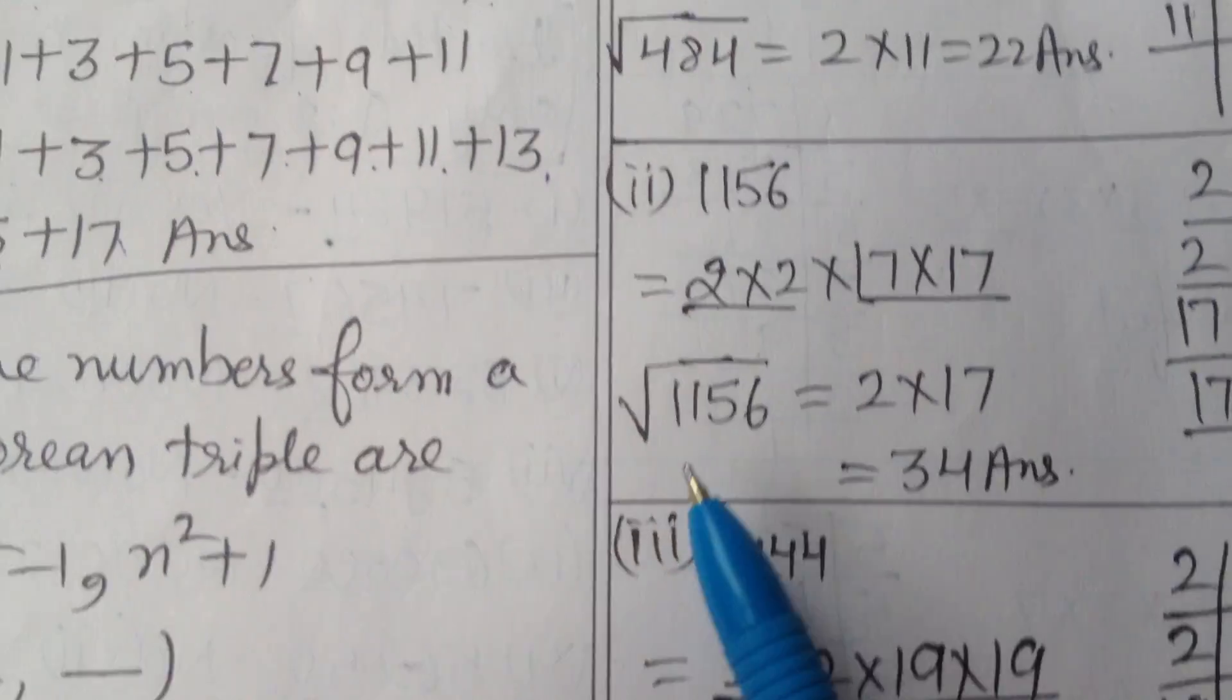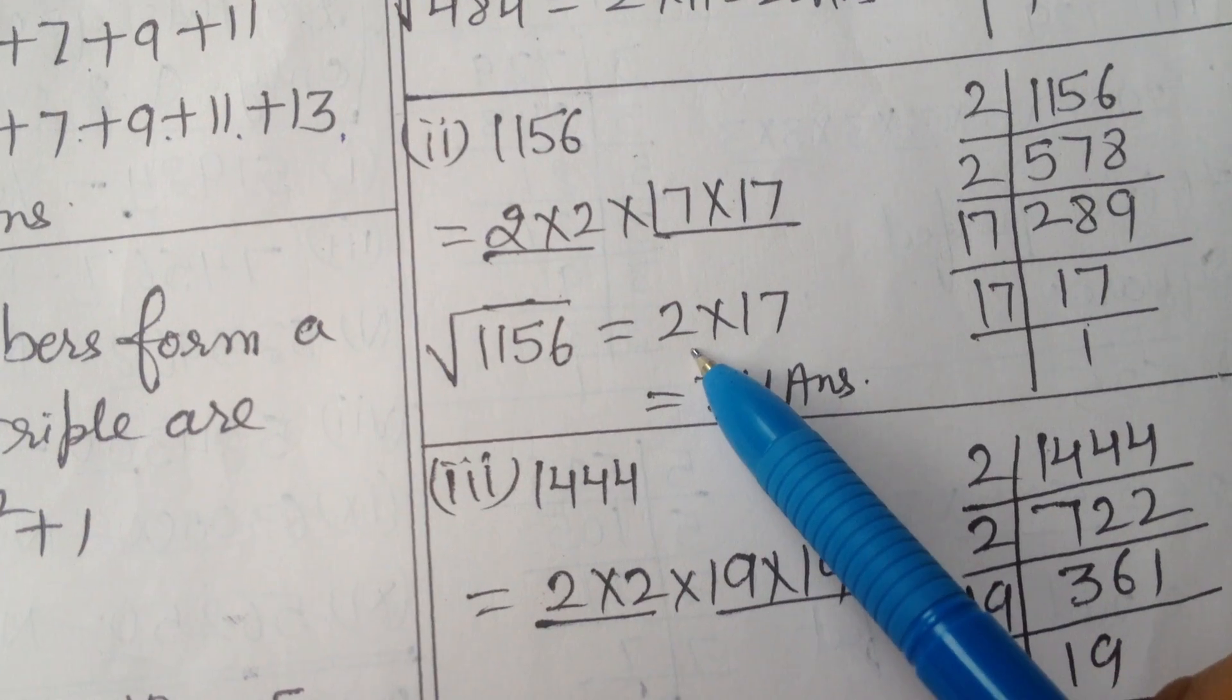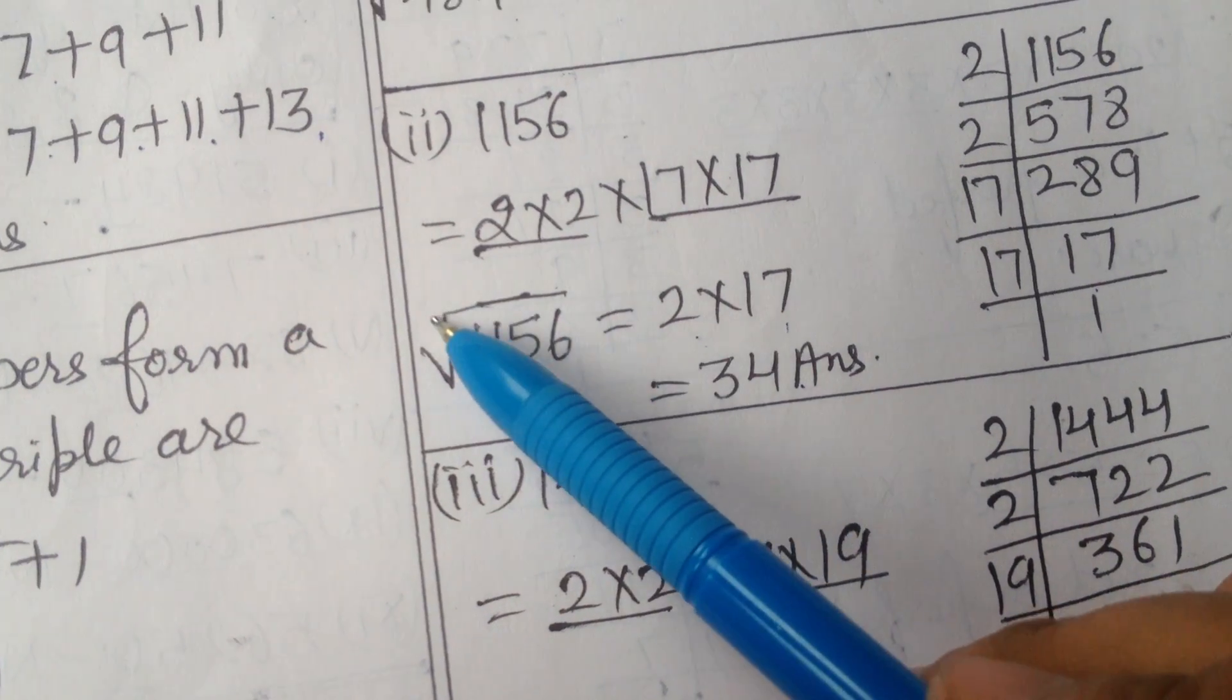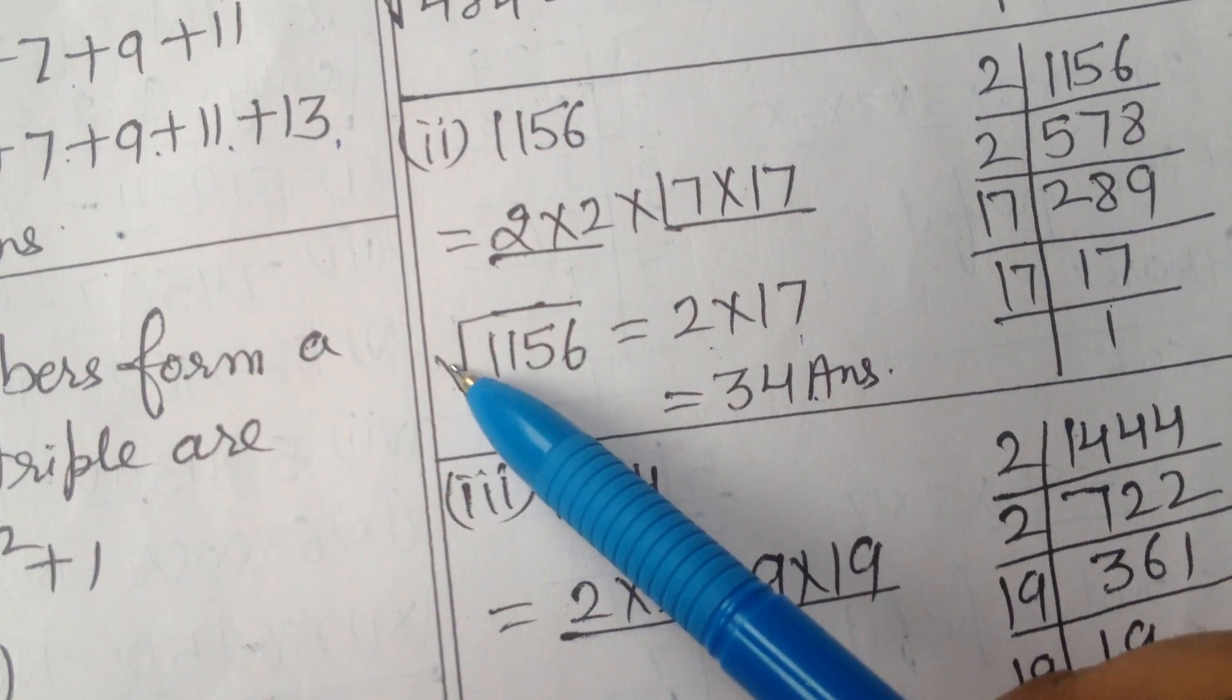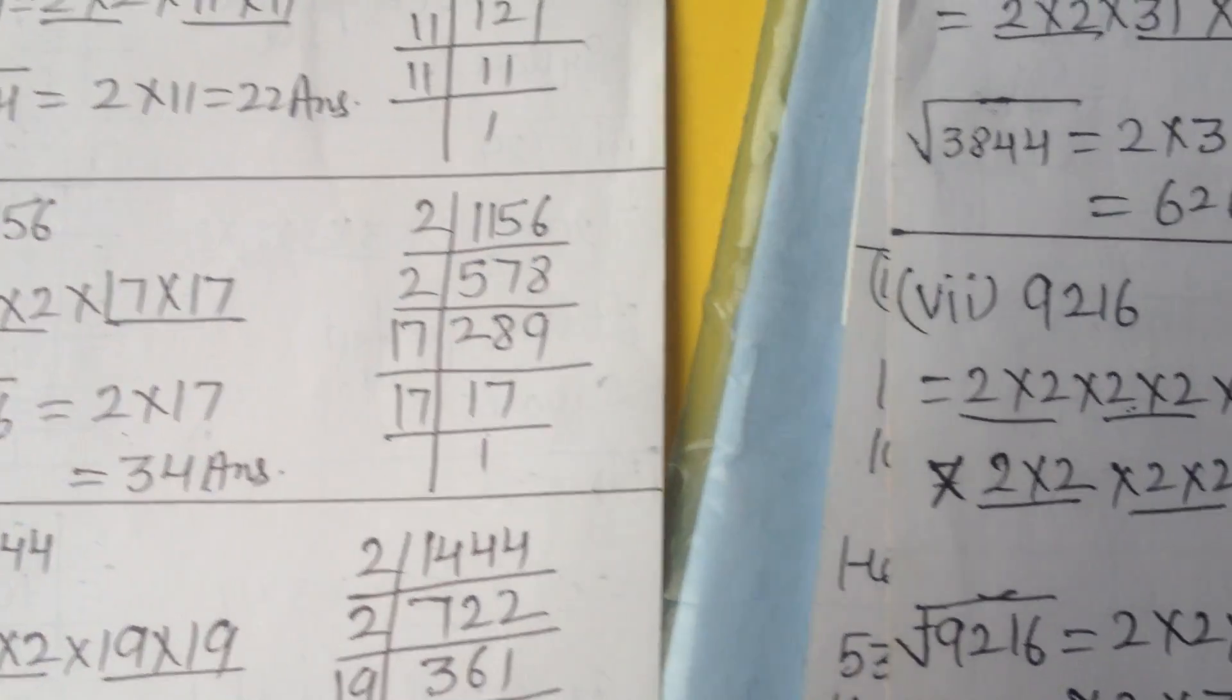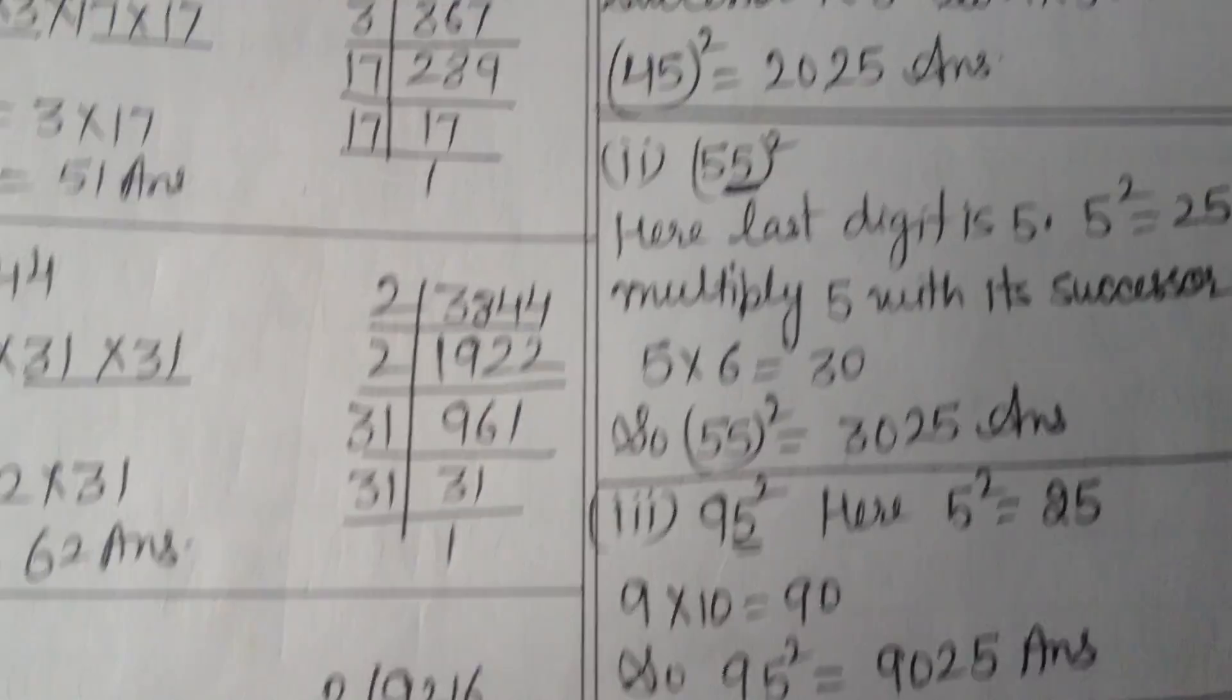Next part is 1156. Same isse tarah banalo. From this pair take one 2. Here 17, multiply both, 34 is the answer. This sign is the square root sign. Other parts you will do by yourself, you can take help from this assignment.